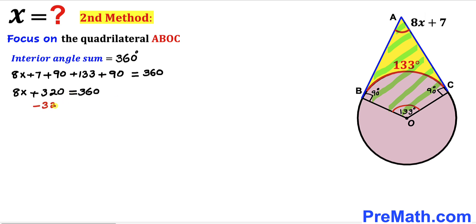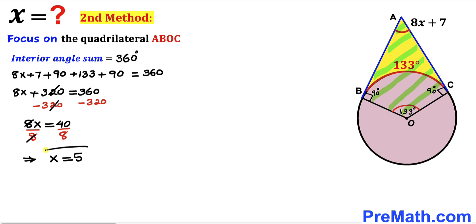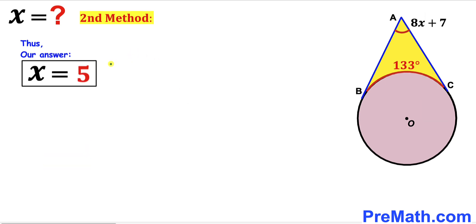Combining the constants: 8x + 320 = 360. Subtracting 320 from both sides gives 8x = 40, and dividing both sides by 8 gives x = 5. Thus our x value turns out to be 5 by the second method as well — that's our final answer. Thanks for watching, and please don't forget to subscribe for more exciting videos.